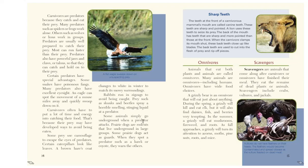Some animals simply go underground when a predator attacks. Prairie dogs are rodents that live underground in large groups; some act as guards, and when they spot a predator such as a hawk or coyote, they warn the others. The teeth at the front of a carnivorous mammal's mouth are called canine teeth — sharp and pointed. A lion uses these teeth to seize its prey. The back teeth close up like blades and are used to cut into the flesh of prey and rip off pieces.